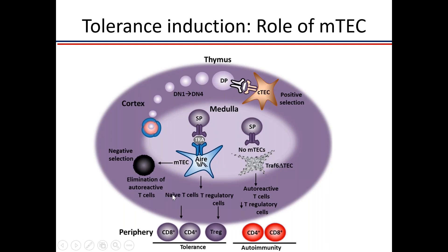Normally, T cells develop in the cortex, becoming double-positive cells. They then become single-positive: if a T cell recognizes MHC class I better, it keeps CD8 on its surface and shuts down CD4. If it recognizes MHC class II better, it keeps CD4 and shuts down CD8. So from double-positive cells, they become either CD4 or CD8 single-positive cells.